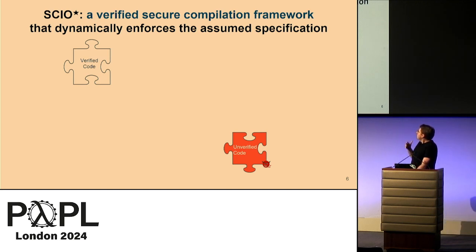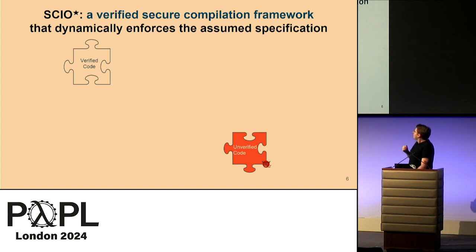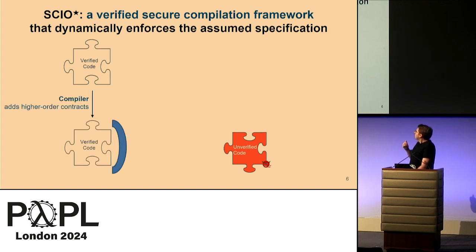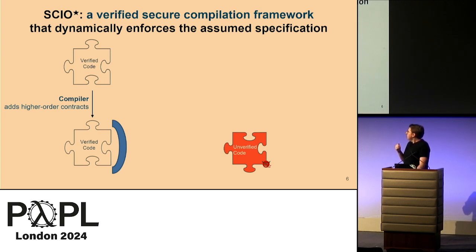In this work, we assume that the two components are in the same language, but one is annotated with pre/post-conditions and one is not. This makes all assumptions explicit. Our framework uses two techniques to enforce these assumptions: the first is adding higher-order contracts during compilation, and the second is a reference monitor added during linking.